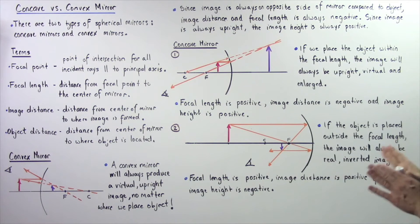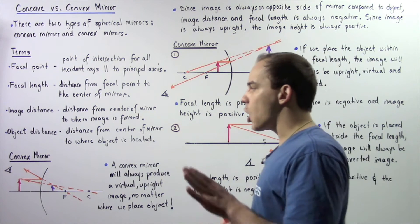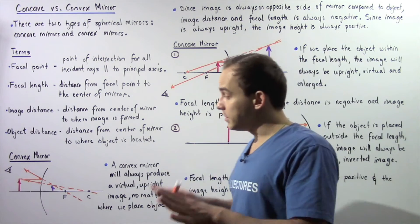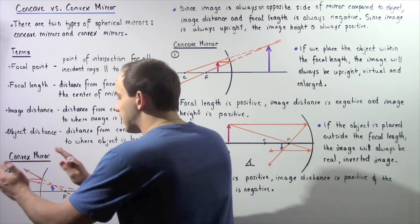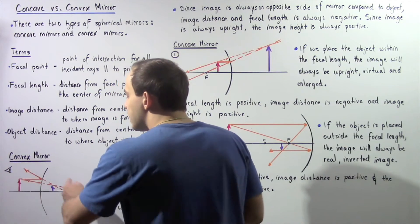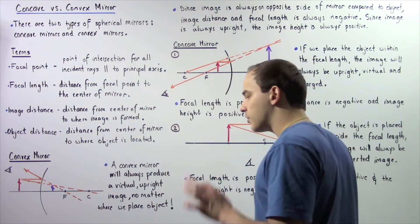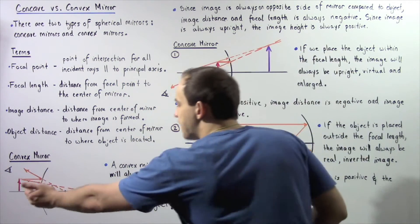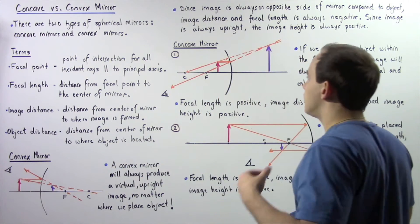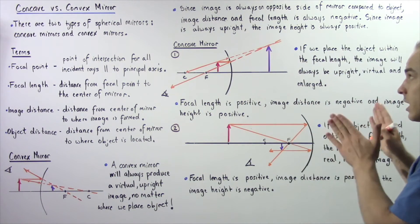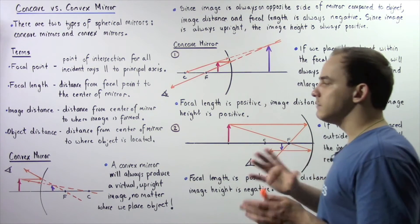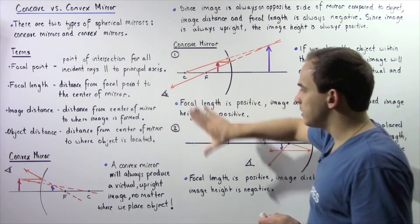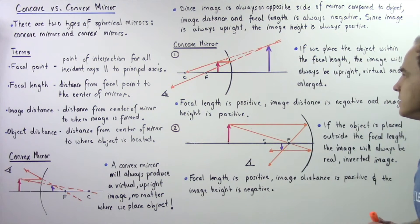Now let's move on to concave mirrors. Convex mirrors are relatively simple because no matter where we place the object on the left side, the image will always be virtual, upright, and found on the right side. But for concave mirrors, it's slightly more complicated — we have two different cases that we must consider.